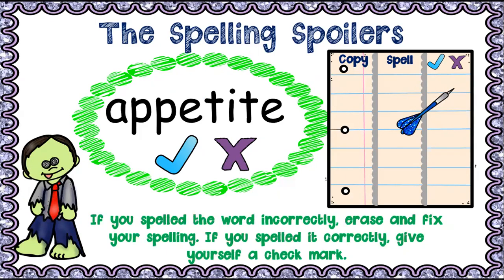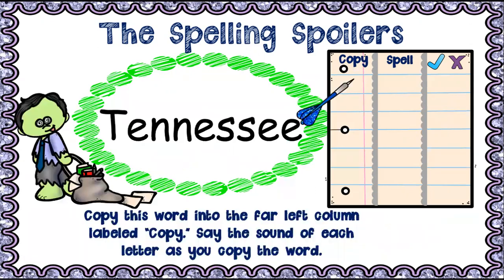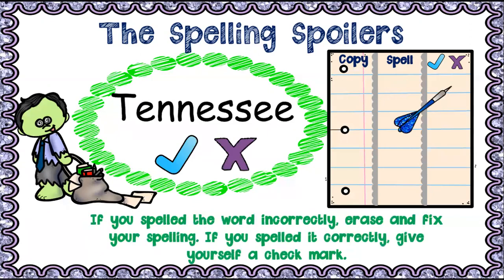Number six — 'Tennessee.' Check your answer. If it's correct, bubble 'yes'; if incorrect, bubble 'no' and copy it correctly. Tennessee — pay attention to your 'e's here; they're not saying a 'u' sound, but they are making that 'uh' — that's the schwa sound.